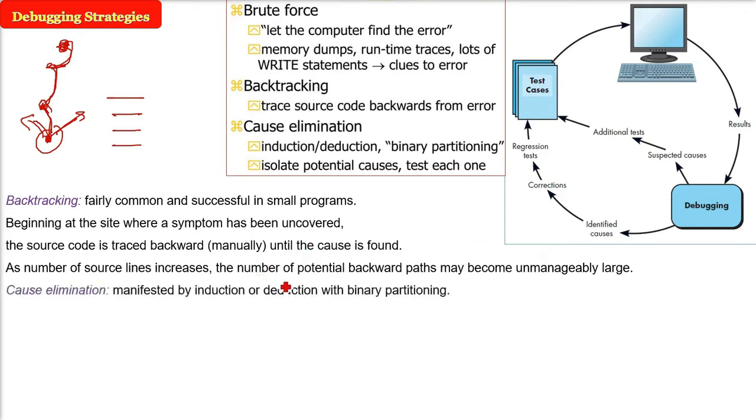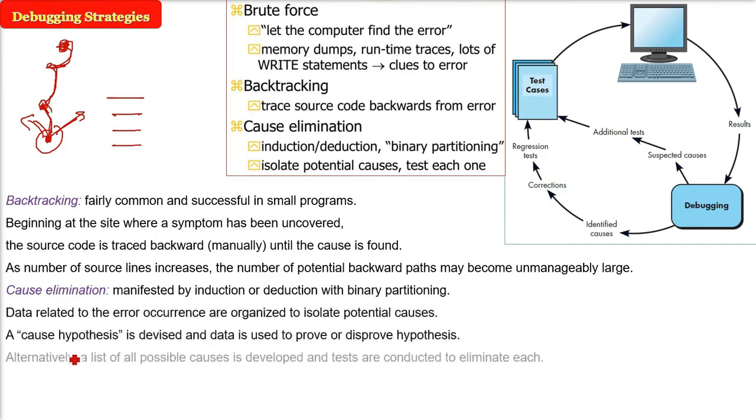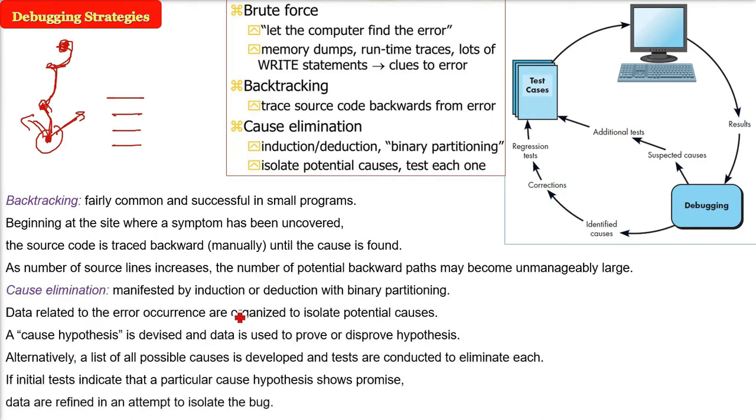Coming to cause elimination. Cause elimination is manifested by induction or deduction with binary partitioning. What we do here is based upon our experience. For example, if we are doing file transfer and the file is received but the size is less, one kilobyte sent is slightly less than that. So what may be there?